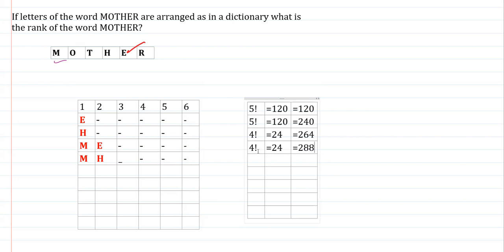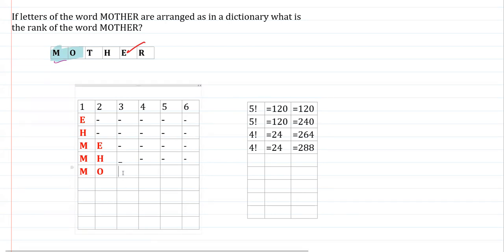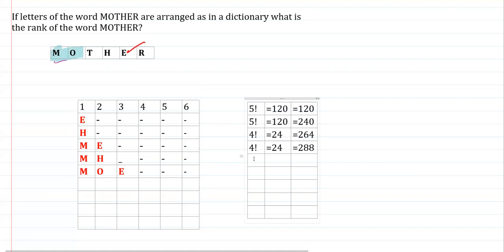After MH words, the next second letter is O — giving us MO. Now we decide the third letter. Alphabetically, E comes first, so we fix E in the third place. We have three remaining slots arranged in 3! = 6 ways. Adding 6 to 288 gives 294.